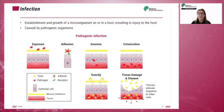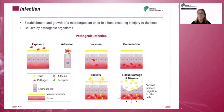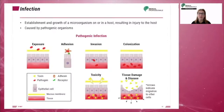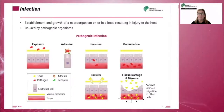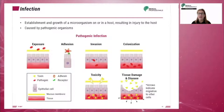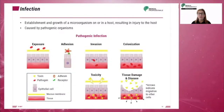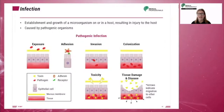The exposure is the initial phase during which the mucous membrane of the tissue is exposed to the pathogens. The adhesion phase follows when the pathogen adheres to the receptor of the epithelial cell. Then the pathogen invades the epithelial cell and reaches the tissue. This is called the invasion phase.